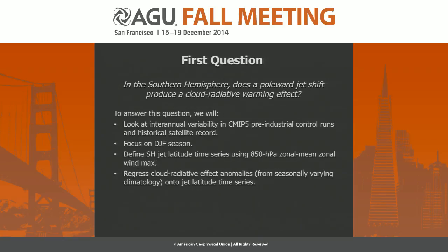We had a very simple question: in the Southern Hemisphere, does a polar jet shift produce a cloud radiative effect? We're going to look at this not in terms of forcing yet — at the end of my talk I'll talk about CO2 forcing — but for now I just want to think about internal variability, specifically when the jet wobbles between a more poleward and equatorward position. We can look at the pre-industrial control runs of the CMIP5 model, so hundreds of years of unforced variability, and compare that to the variability seen in the observed satellite record.